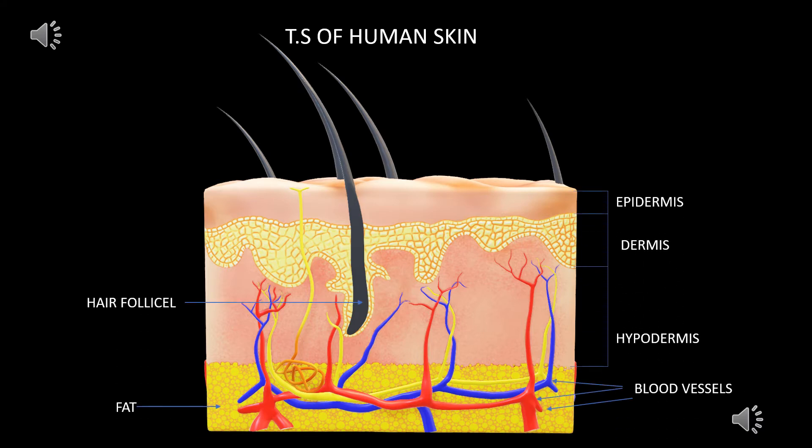The human skin consists of the epidermis, the outermost layer of skin which provides a waterproof barrier and creates our skin tone. The dermis, beneath the epidermis, contains tough connective tissue, hair follicles and sweat glands.